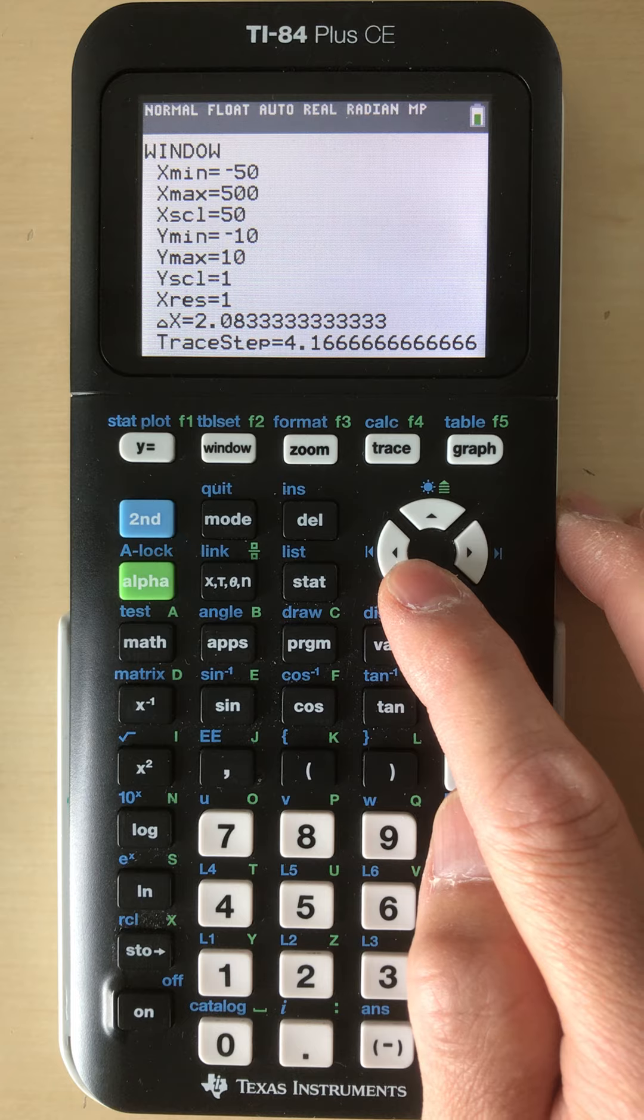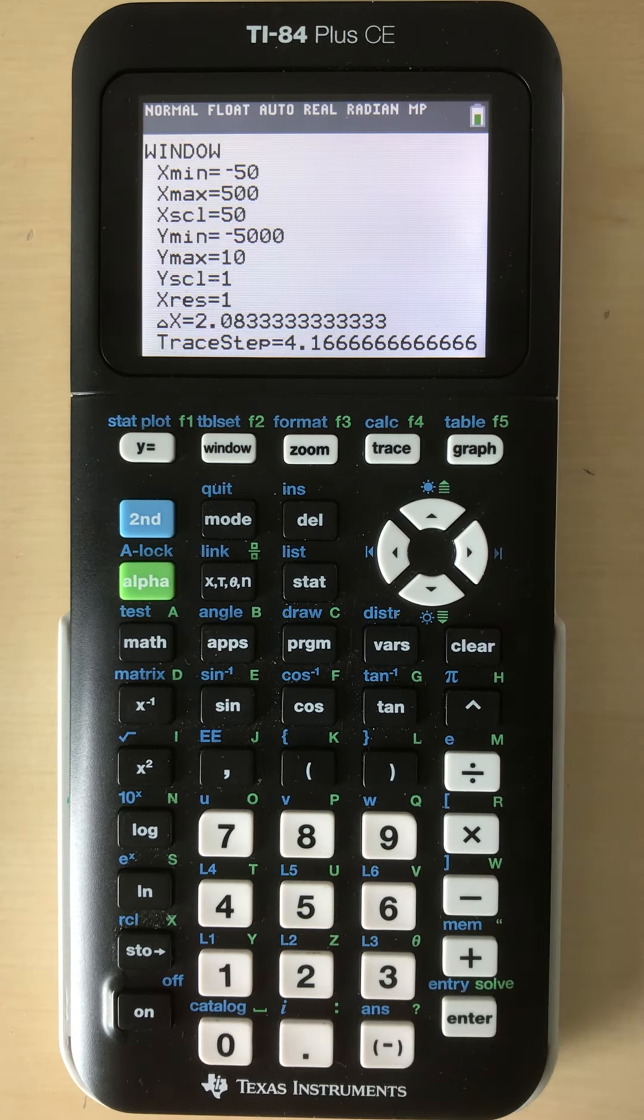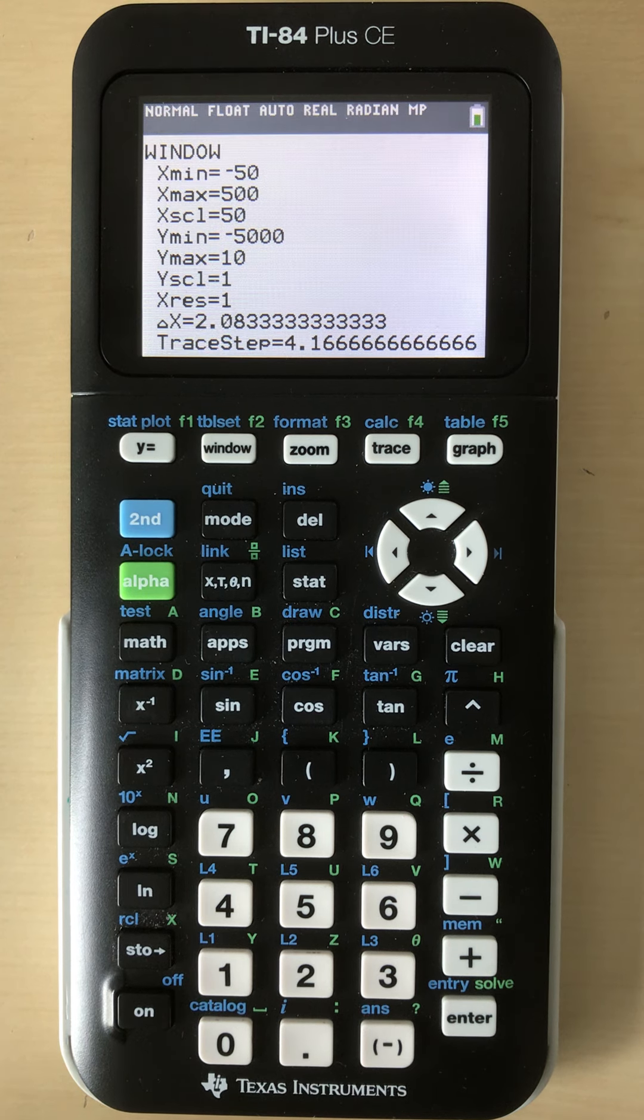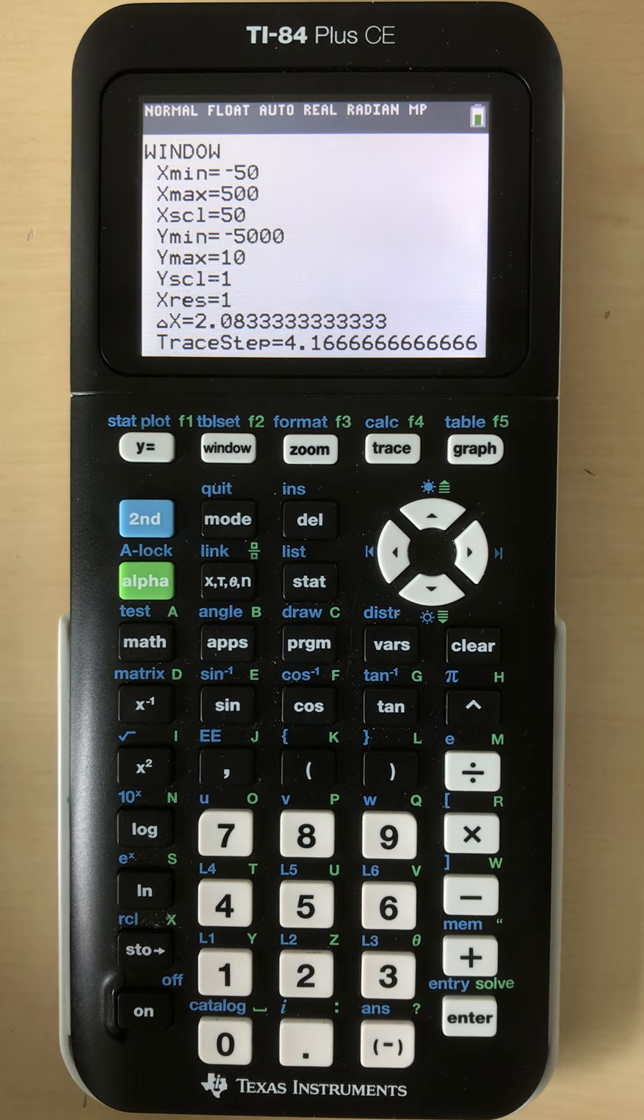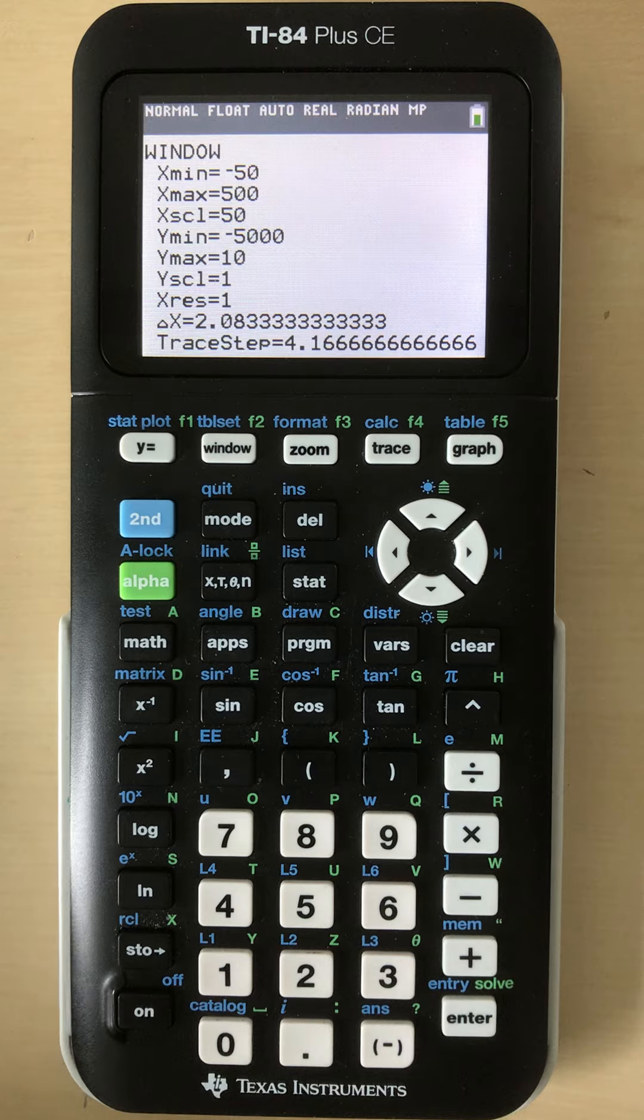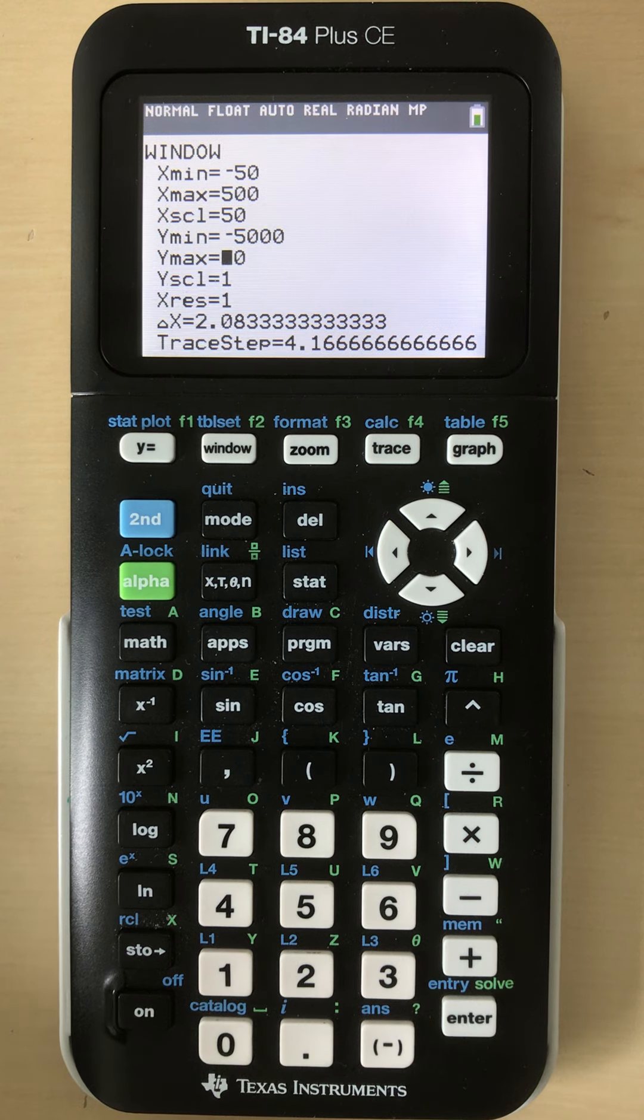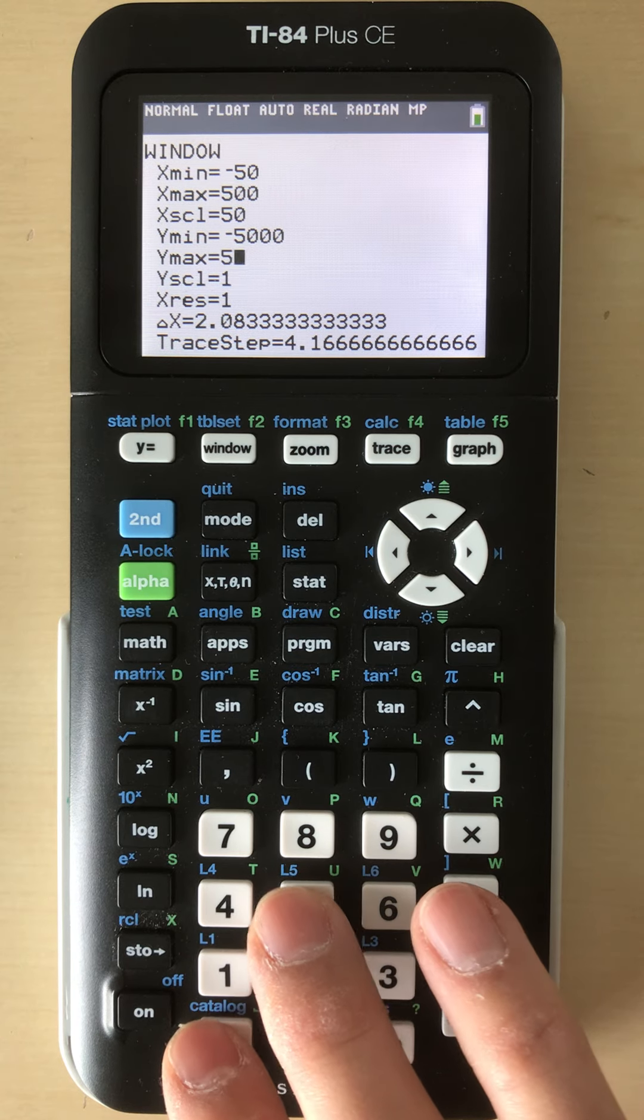Y minimum, I'm going to say negative 5,000. And then a y maximum. So if we think about the fencing here, if we assume—this is just for assumption purposes—if we assume x and y are the same value, so 200, 200, and 200 for the three sides, the area is going to be 200 times 200, which is already 40,000. So let's set our y maximum at 50,000 just to give us room.